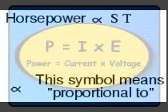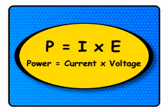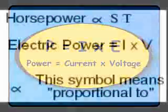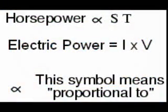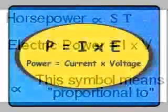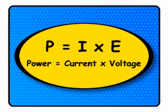In electrical circuits, power is a function of both voltage and current. Not surprisingly, this relationship bears a striking resemblance to the proportional horsepower formula. In the case of electrical power, however, power P is exactly equal to current I multiplied by voltage E, rather than merely being proportional to I times E.